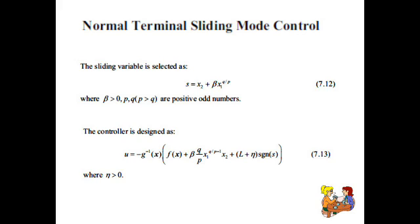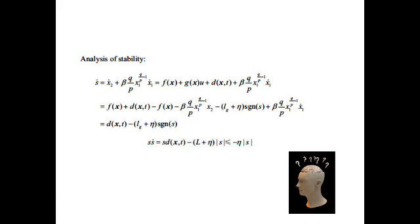Now let's review this in a bit more detail. The sliding variable S is selected in the same way with all the same conditions. The control law U is given by equation 2.13, where eta is positive and L is the bound on the added disturbance term. For the stability analysis, it is suggested to follow along with a piece of paper to gain better understanding.